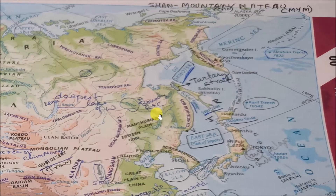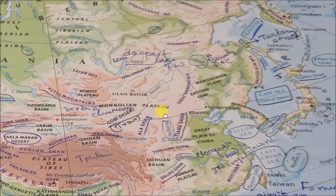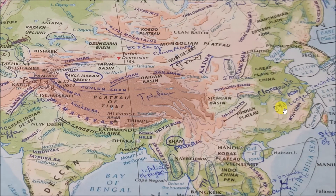So you can note that if any mountain has 'Shan' in its name, it is in China. For example: Dalao Shan, Wuhi Shan, Alang Shan, Nan Shan, Altun Shan, Kunlun Shan — all these mountains are in China.